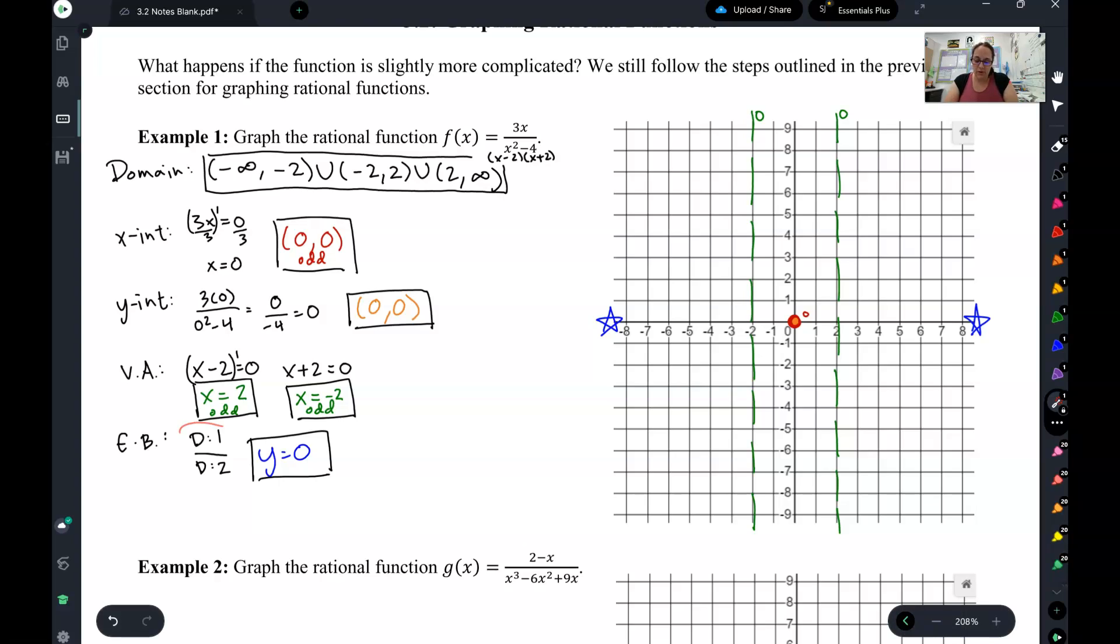Last, end behavior. The degree on top is 1, degree on bottom is 2. So this is bottom heavy, so it is 0. So I put my stars at 0.